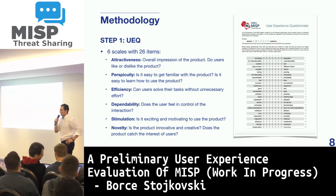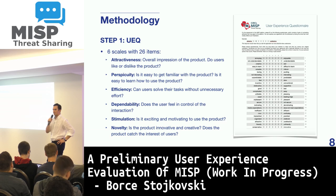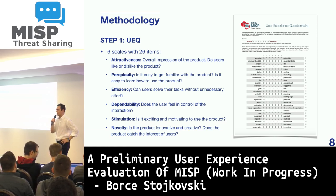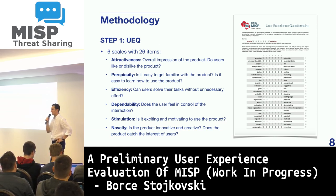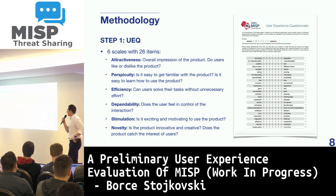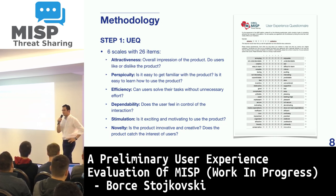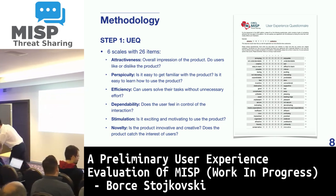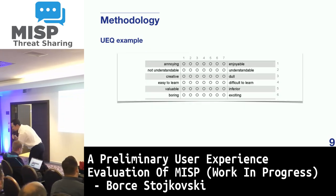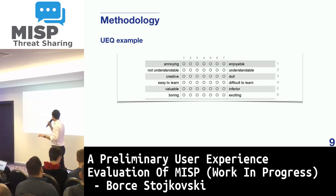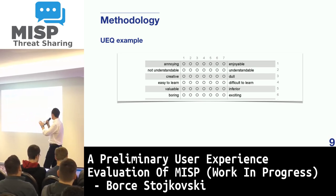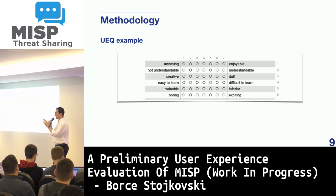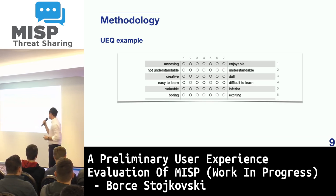We investigated this as a first step via a quantitative method called the User Experience Questionnaire, which is a combination of six scales with 26 items that asks people to rate specific aspects from two opposing views — for example, do you find the system annoying or enjoyable — and they pick a value between these two.